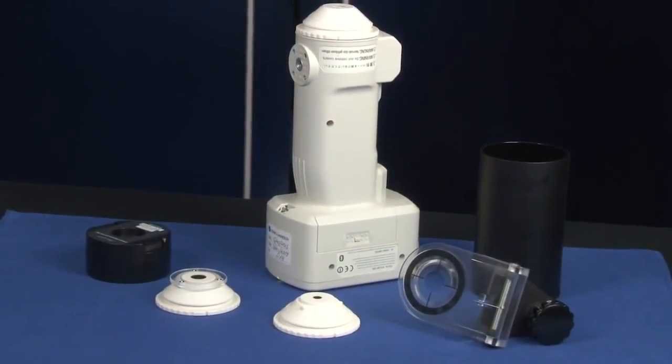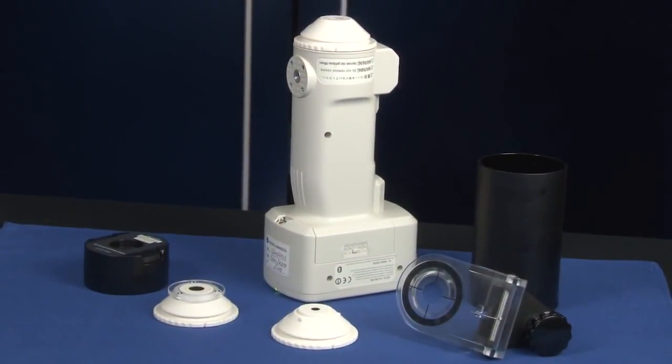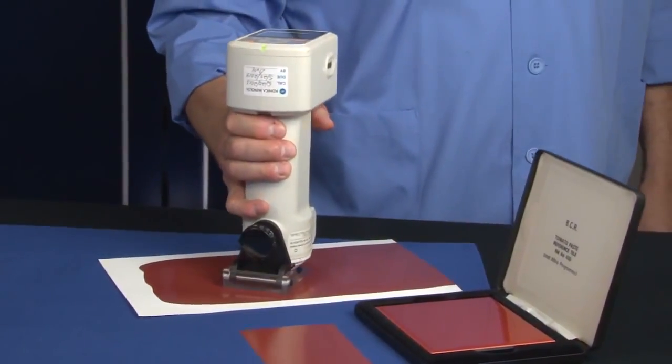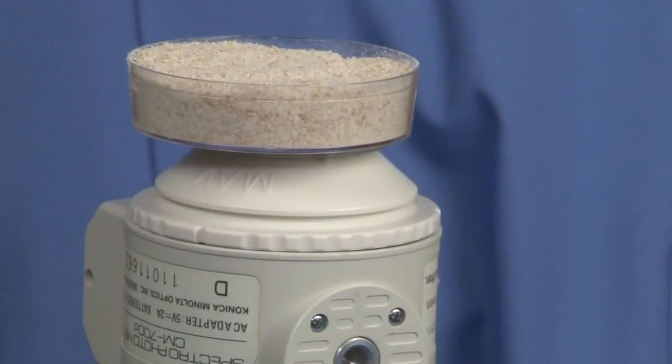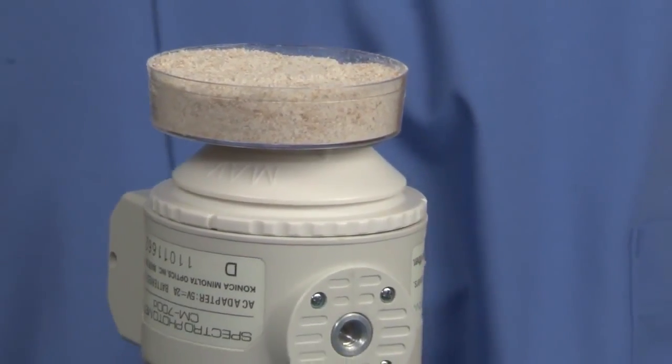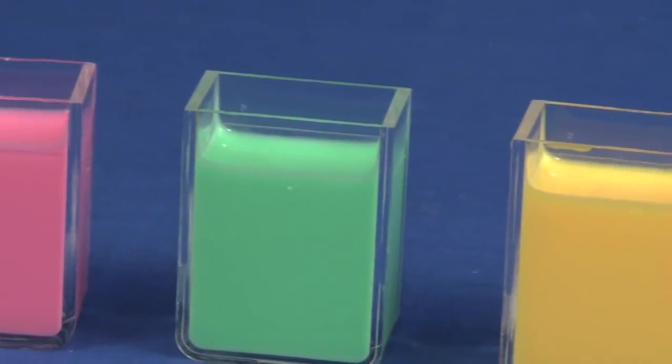The design of the CM700D with optional accessories make it suitable for precise and repeated color measurement of samples with a variety of surfaces and properties, such as flat surfaces, curved surfaces, and wet samples.